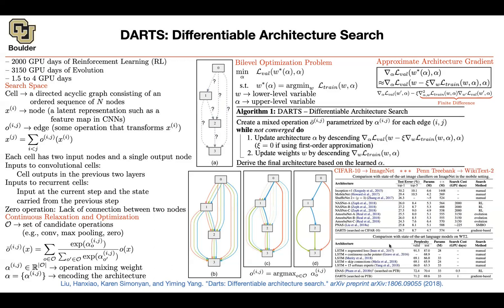The big picture is that architecture search is much faster, but you are sacrificing memory — you need to store all of these operations, the weights and biases of all of them, in memory simultaneously.